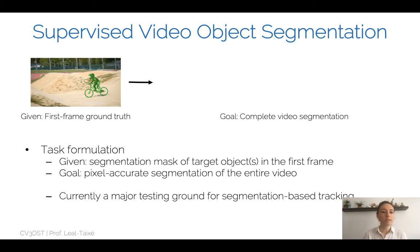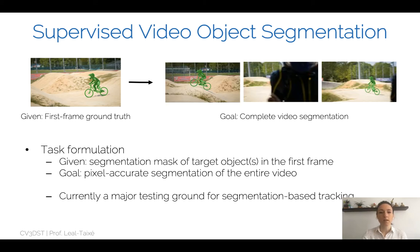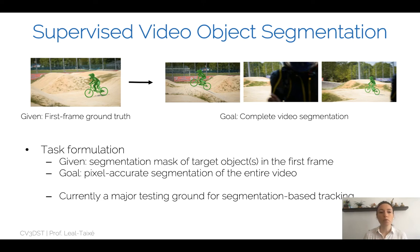Here again is the definition of supervised video object segmentation. We are given a first frame ground truth — for example, this biker with the green mask around it. Given this segmentation mask, our goal is to obtain pixel-accurate segmentation for the entire video. It is not easy just because we get the first frame ground truth: we have all kinds of scale and viewpoint changes, and also occlusions. For example, the middle frame contains no biker because it is occluded by a person, breaking any type of continuous motion we want to impose.